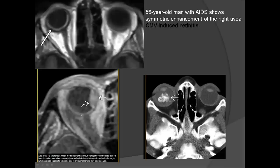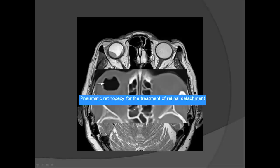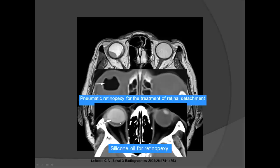Moving to the uveal and retinal layers: inflammation can cause retinitis. In an AIDS patient, the vascular retina can have metastases. A young patient with calcification in the back of the eyeball may present with leukocoria — a sign of retinoblastoma. Retinal hemorrhage can elevate the retina, separating it from the choroid layer. Treatment of retinal detachment involves placing oil or air into the eye to push the retina back.